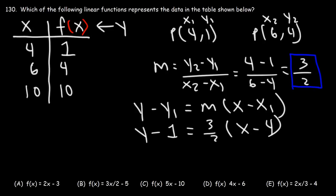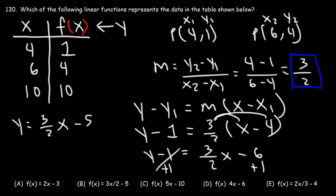So we're going to use y1 as 1, m is 3 over 2, x1 is 4 based on these values. Now, let's distribute 3 over 2 to x minus 4. So we're going to have 3 over 2 x, and then 3 over 2 times negative 4. 3 times negative 4 is negative 12. Negative 12 divided by 2 is negative 6. Now the next thing we need to do is add 1 to both sides. Negative 6 plus 1 is negative 5. Now at this point, you could replace y with f of x. So we could say that f of x is 3 over 2 x minus 5, which means B is the right answer.